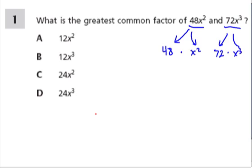So the idea now is that I've identified the coefficients, which are 48 and 72, and I've identified the variables which are x squared and x to the third. In both cases I'm going to look at the greatest common factor and then I'm going to recombine all this stuff to make the greatest common factor that goes into both the variables and the coefficient.